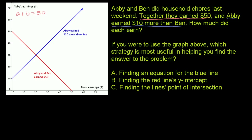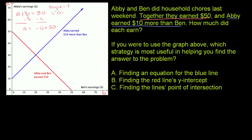If we look at how they graph things, on the vertical axis — what we normally associate with the y-axis — they graphed Abby's earnings, so we could call this the A-axis. On the horizontal axis — what we normally associate with the x-axis — they've charted Ben's earnings, so this is the B-axis. To map this into traditional slope-intercept form, we express A in terms of B — the vertical variable in terms of the horizontal variable, just like y = mx + b. We subtract B from both sides and get A = -B + 50. So we have a slope of negative 1 and a y-intercept of 50.